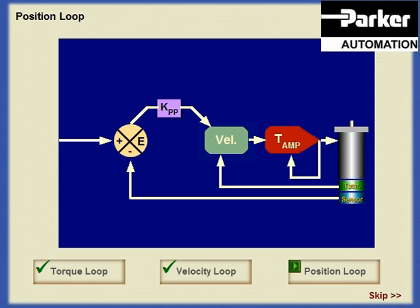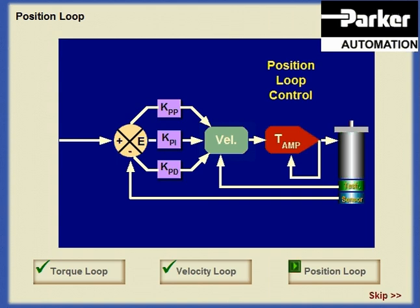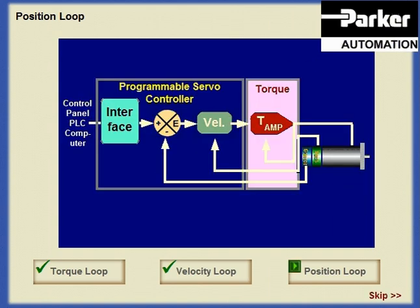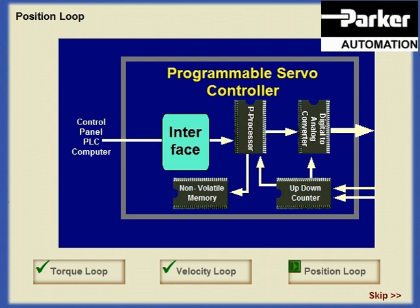Through the use of additional user-adjustable controls, which react to past and predicted behavior of the process under control, positioning servo systems can overcome these variations. This requires the introduction of the programmable servo controller. Controllers of this type are microprocessor-controlled, accept digital or numerical position commands, and typically receive incremental digital encoder feedback. Position error is determined numerically rather than electronically. Only for the velocity or torque control command signal does the controller convert digital information into analog.